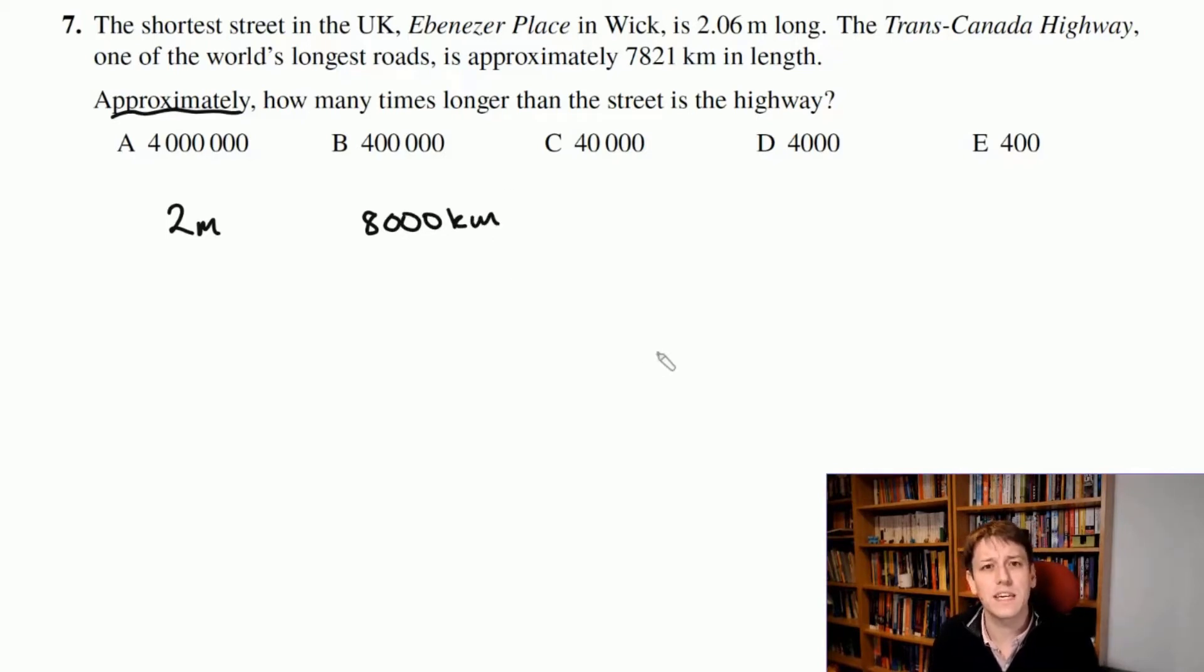The next thing we have to be careful about is that 1 kilometer is 1,000 meters, so we've got to make sure we're working in the same units. So 8,000 kilometers is 8,000,000 meters or 8 million meters. And so I want to divide that by 2, and then I will get 4,000,000, and that means the answer is A.